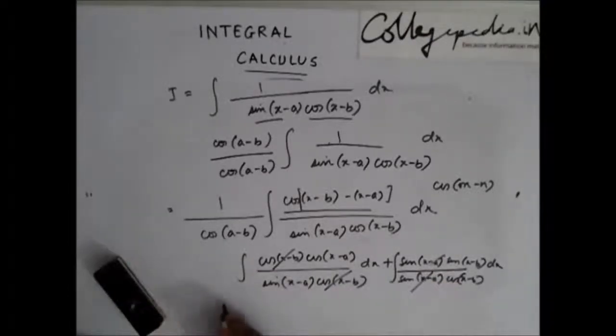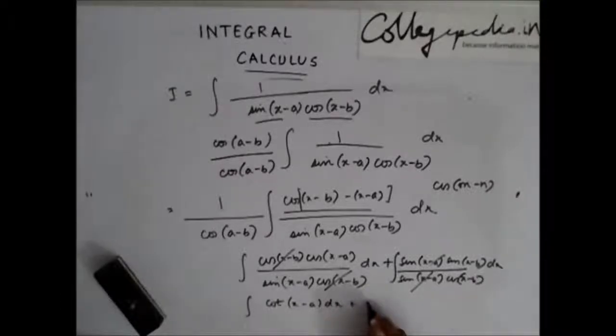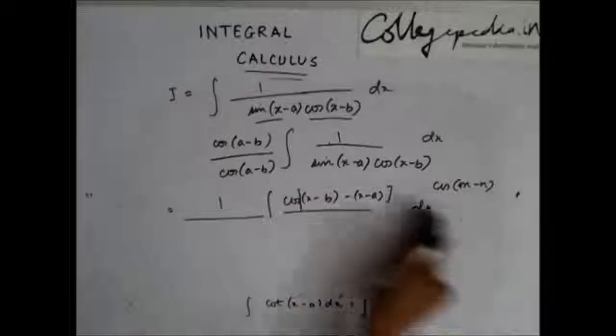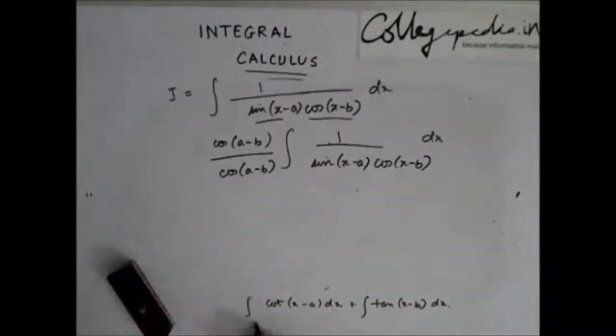So I am left with integration of cot x minus a dx plus integration of tan x minus b dx. Now you know that integration of cot x is what? So I have been left with this.